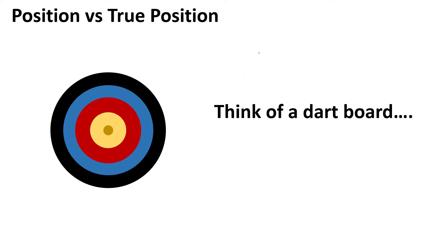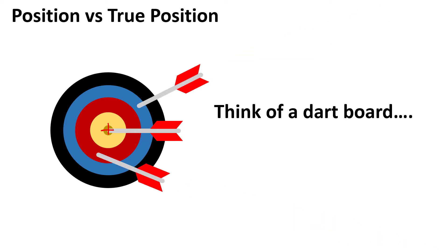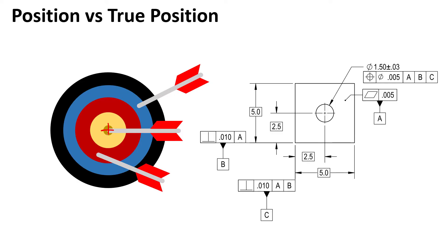I want to outline why those two are different, because when we teach in our courses we use the two terms very regularly, but they are different things. First of all, I want you to think about a dartboard. When you're playing darts, you're shooting for the bullseye — the number one thing you want to do is get that dart to land right in the middle. But obviously sometimes you hit it and sometimes you don't. That's very similar to how position works — the position control itself is controlling the location of a feature.